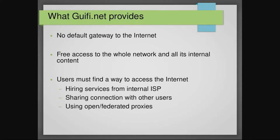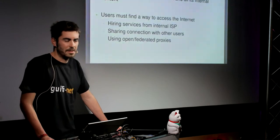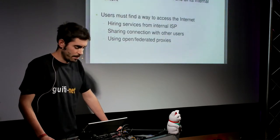What does GIFINET provide? Once you connect to GIFINET, you don't have access to the internet by default — there is no internet gateway. So each user must find a way to connect to the internet. For instance, you can hire a service from an ISP, you can share the connection with other users on the same network, or you can use a network of federated open proxies, which are available for anyone but with restricted access, for example only HTTP or HTTPS protocols.